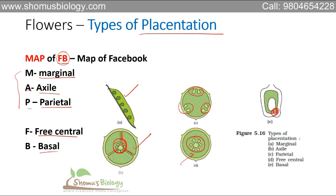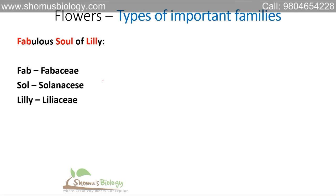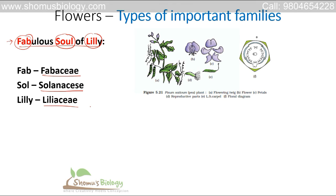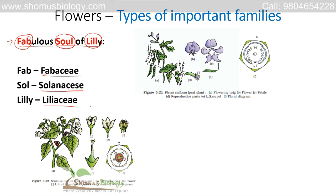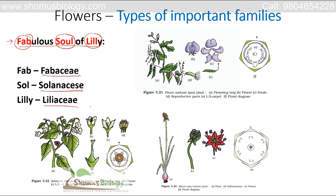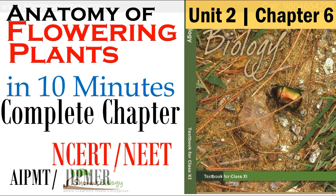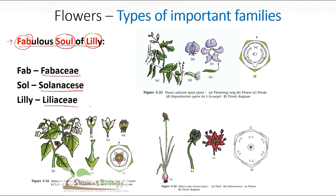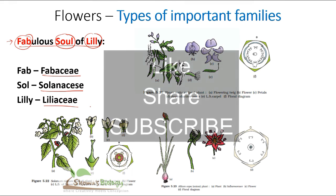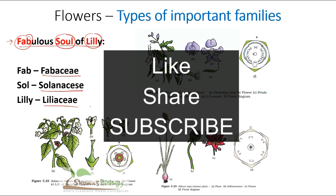The last thing is important plant families, remembered as 'Fabulous soul of lily.' Fab for Fabaceae — example Pisum sativum; Sol for Solanaceae — example Solanum nigrum, also known as nightshade; and Lily for Liliaceae — example Allium cepa, which is onion. That covers all the important details about roots, stem, leaves, flowers, and plant families. Please like, share, and subscribe for more videos.